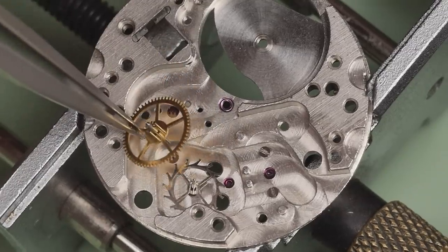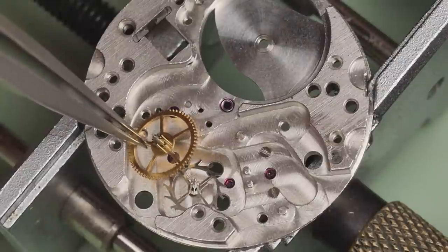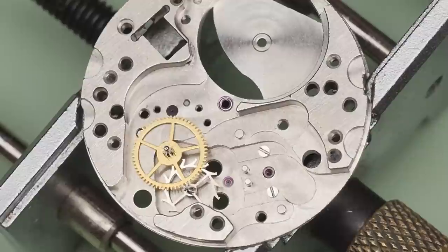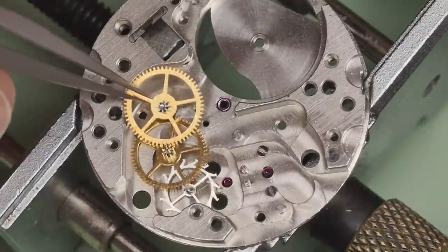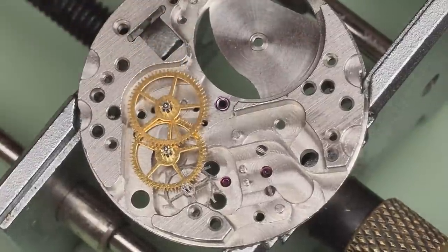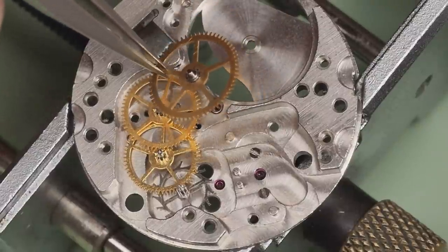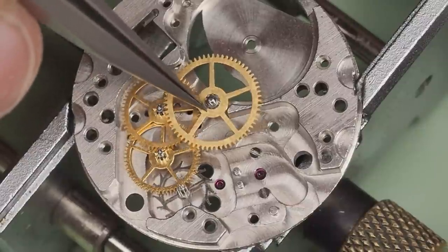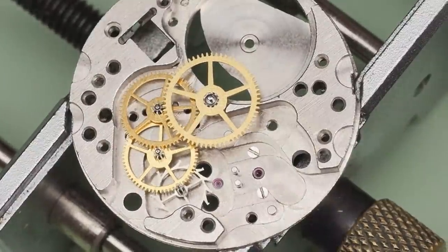The train of wheels is now refitted starting with the escape wheel. The fourth wheel goes in next with its extended pivot for the sub-seconds hand. The third wheel is placed back into its pivot hole. And then the center wheel goes back in.